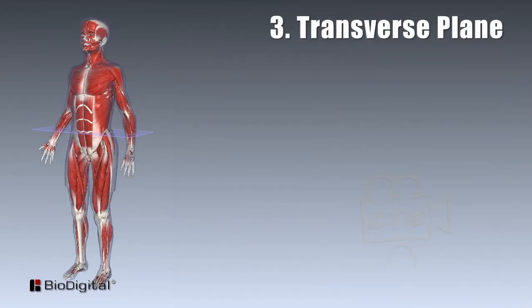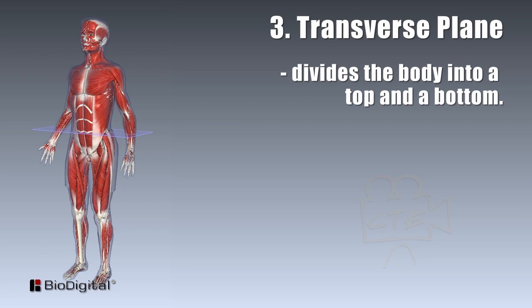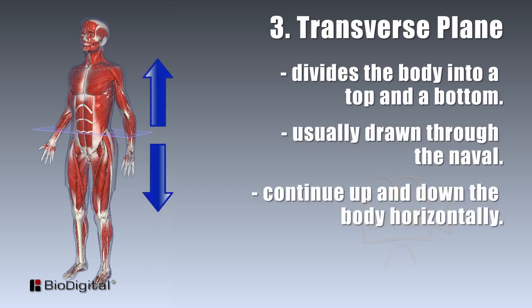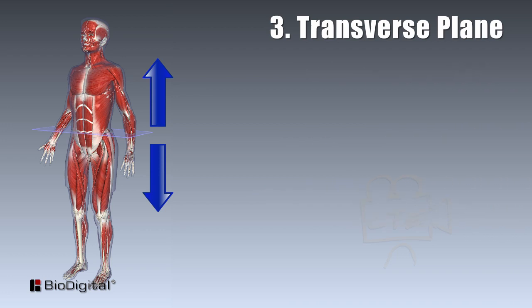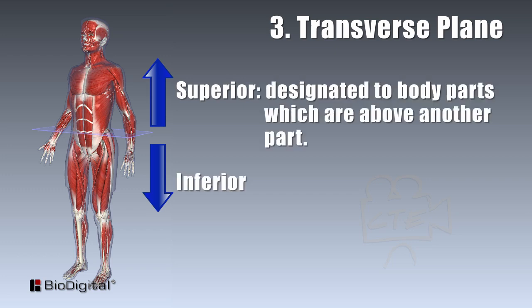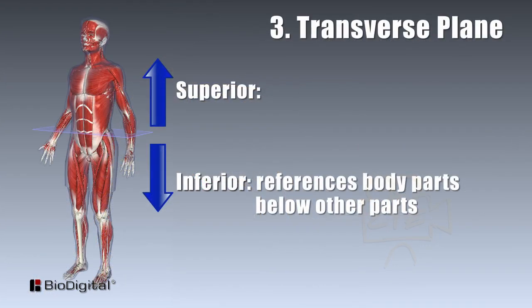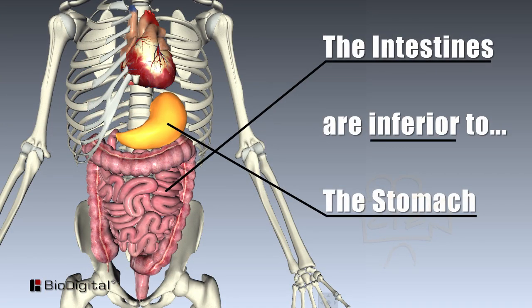Our third plane is the transverse plane. The transverse plane is commonly demonstrated by dividing the body into a top half and a bottom half, usually drawn through the navel. Transverse planes continue up and down the body horizontally. The directional terms for this plane are superior and inferior. Superior is designated to body parts which are above another part — for example, the heart is superior to the stomach. Inferior references body parts below other parts — for example, the intestines are inferior to the stomach.